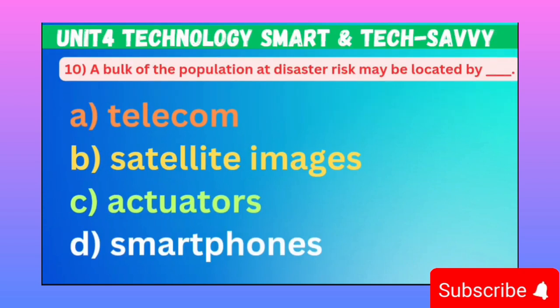MCQ number ten, last from Unit number four, Technology Smart and Tech Savvy from English Book One for first-year classes: A bulk of population at disaster risk may be located by dash-dash. Option A: Telecom. B: Satellite Images. C: Exuator. D: Smartphone. Correct option is B, Satellite Images.